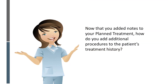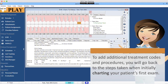Now that you've added notes to your planned treatment, how do you add additional procedures to the patient's treatment history? To add additional treatment codes and procedures, you will go back to the steps taken when initially charting your patient's first exam.